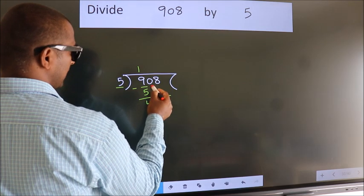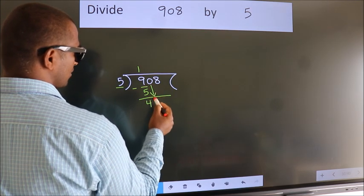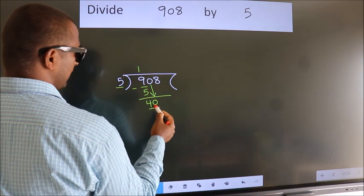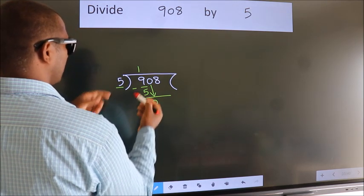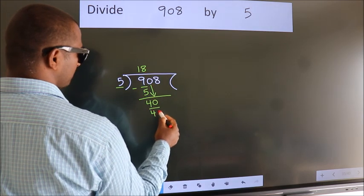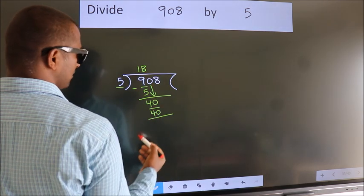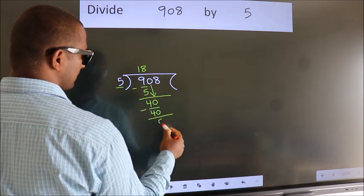After this, bring down the beside number. So, 0 down. So, 40. When do we get 40? In 5 table. 5 eights 40. Now, we subtract. We get 0.